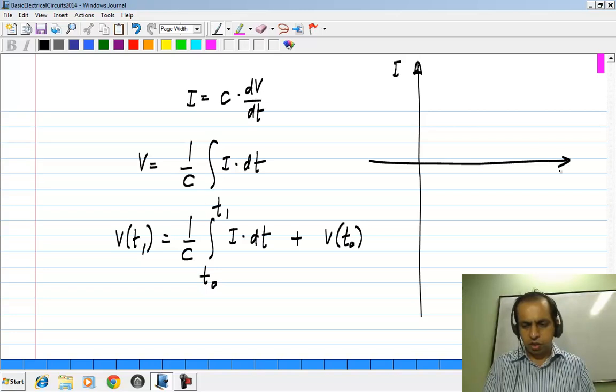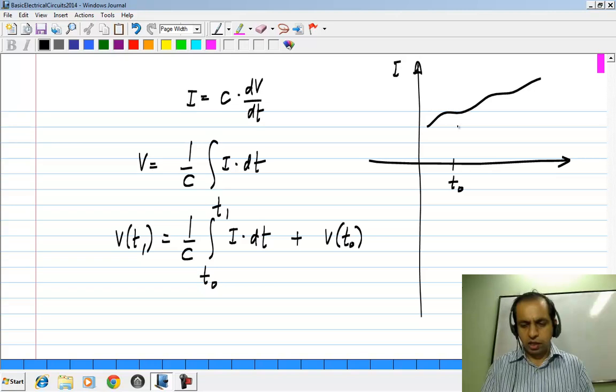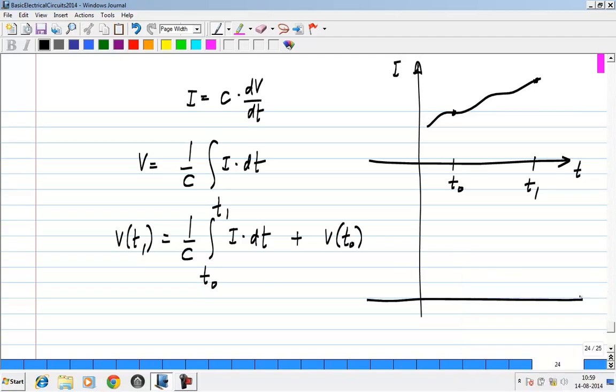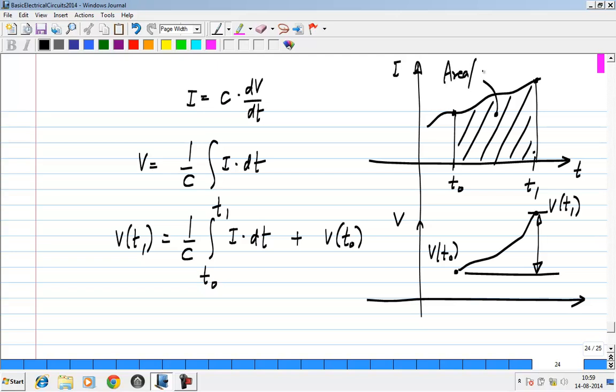So let's say the current follows some waveform like this, and this is T 0 and this is T 1, I have drawn it versus time, and if you plot the voltage, it has some value at T equals T 0, this is the voltage, and it will increase in some way, and at T 1 it will be V of T 1. And this increase V of T 1 minus V of T 0 is given by the area under this curve, area under the current curve divided by C. So this whole thing equals the area under the current curve divided by C. So that is what this is saying.